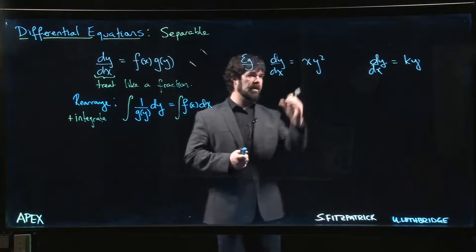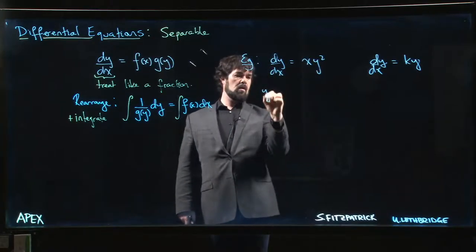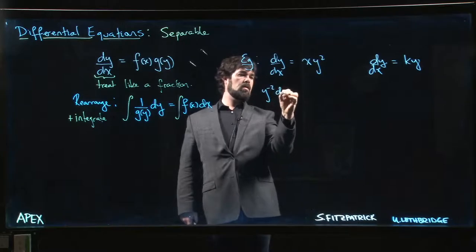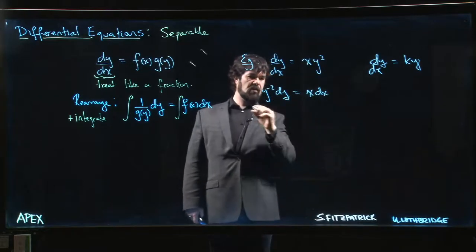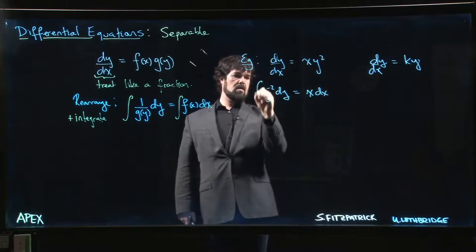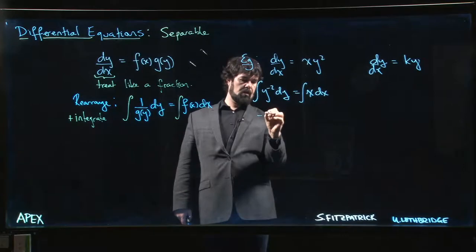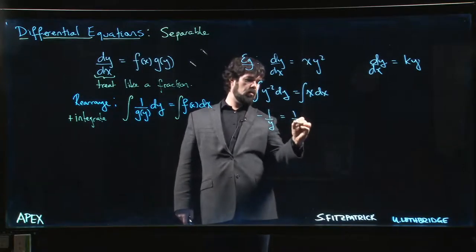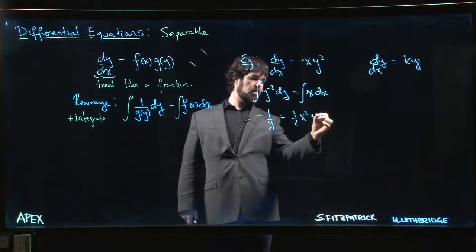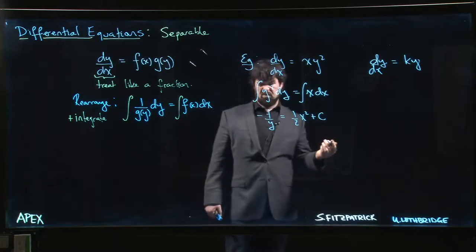So if you're doing something like this one here, well then you want to say that y⁻² times dy equals x times dx, and integrate both sides. So we get -1/y equals ½x².